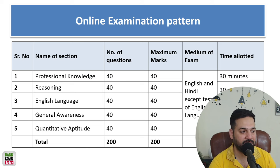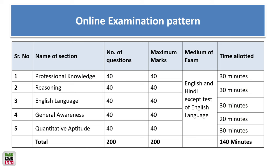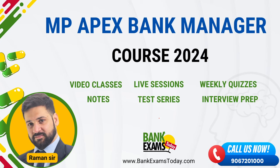This is the exam pattern. Professional knowledge: 40 questions, 40 marks. Reasoning: 40 questions, 40 marks. English language: 40 questions, 40 marks. General awareness and quantitative aptitude: 40 questions each, 40 marks each. Time allocation is 30 minutes each section, with general awareness getting 20 minutes. So 120 minutes are allotted for this particular exam.